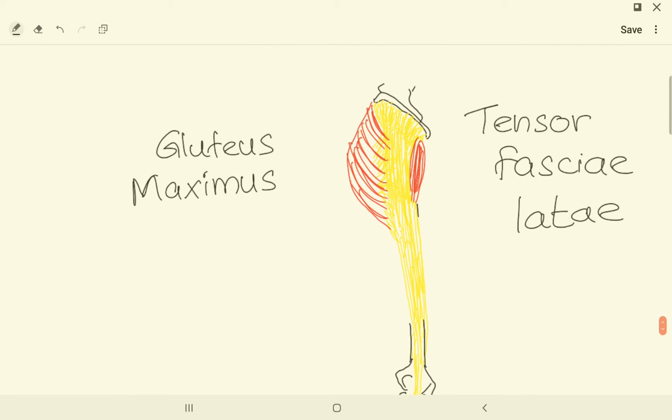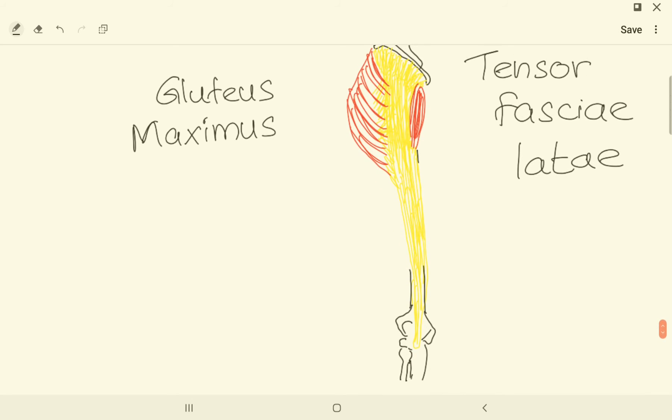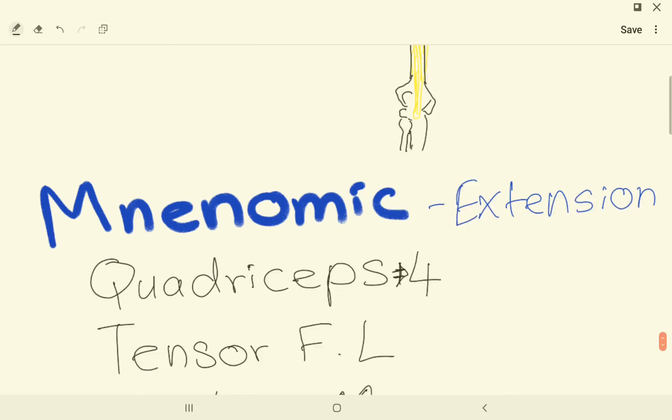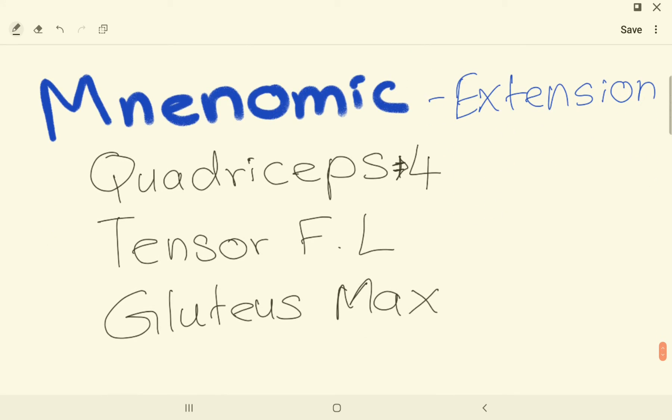Another is gluteus maximus. We have the iliotibial tract here, so it acts where the iliotibial tract with tensor fasciae latae. The mnemonic is we have quadriceps femoris muscles, tensor fasciae latae, and gluteus maximus.